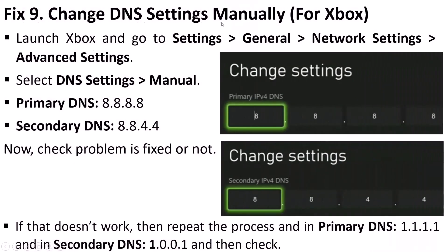Fix 9 is to change DNS settings manually. For Xbox, go to Settings, General, Network Settings, Advanced Settings, select DNS Settings Manual. In the Primary DNS type 8.8.8.8 and in Secondary DNS type 8.8.4.4. Launch the game and check. If not fixed, repeat and this time set Primary DNS to 1.1.1.1 and Secondary DNS to 1.0.0.1, then check again.